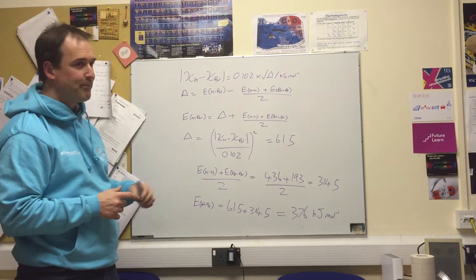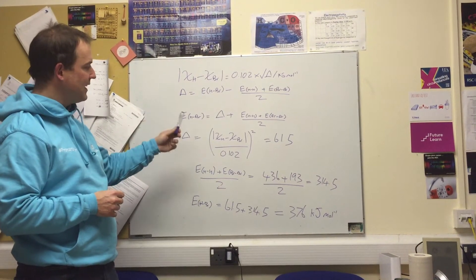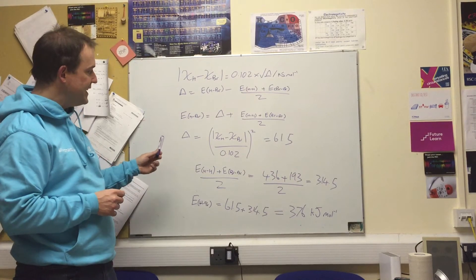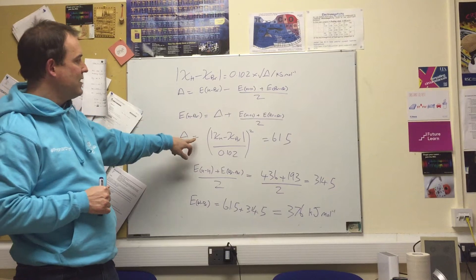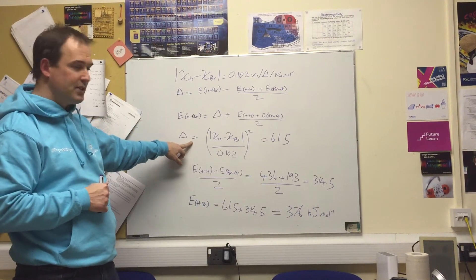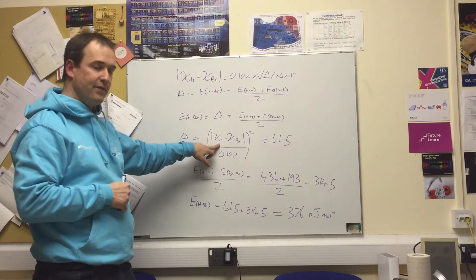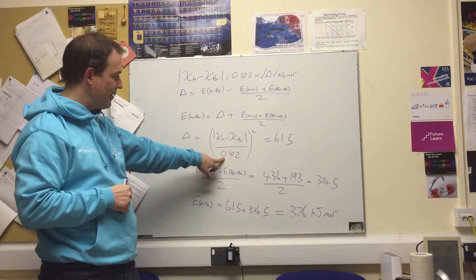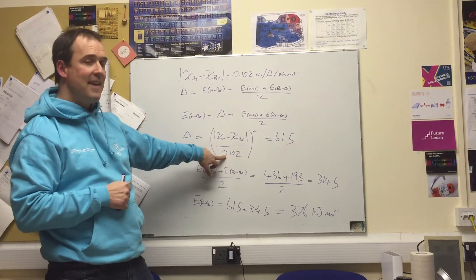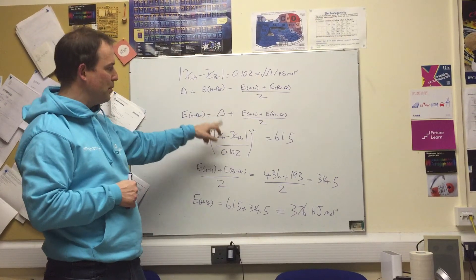Now we need to factor in the ionic bit by working out what delta is. I've rearranged the equation in terms of delta. We take the modulus of the difference, 0.8 divided by 0.102, that conversion factor, and then square it. So it's about 7.8.